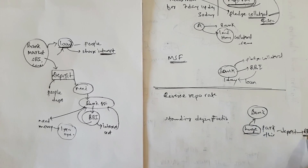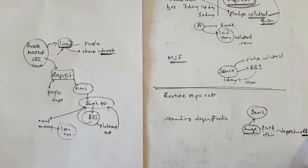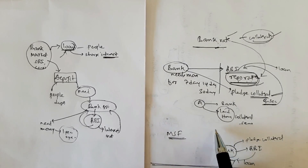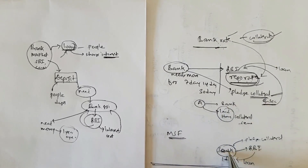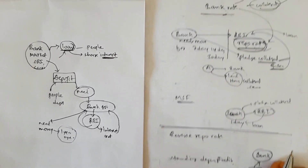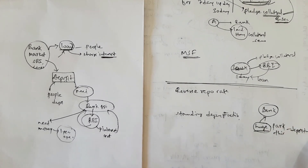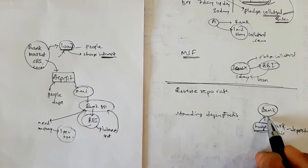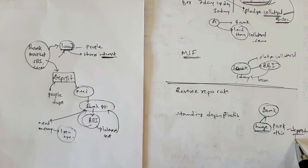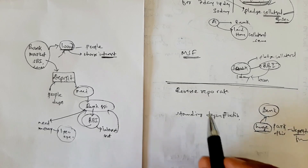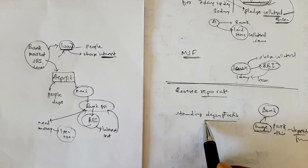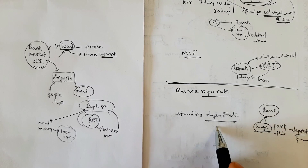So the bank goes to the RBI and parks its surplus funds there. The reverse is happening here: instead of the bank getting a loan from RBI, the bank is giving loan to the RBI — depositing its funds with RBI. While depositing its fund with the RBI, the bank gets an interest rate.